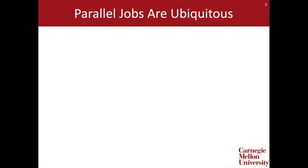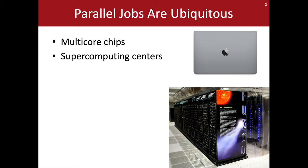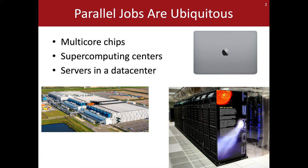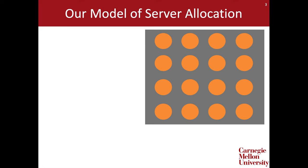As many of you know, modern computer systems are built to exploit parallelism. This could be the multi-core architecture in your laptop, the many cores of a supercomputing center, or even parallelizing across entire servers in a data center. In all of these systems, the workloads are increasingly parallel, which makes it especially important to understand how to efficiently allocate resources. Today we'll consider the problem of allocating servers to parallelizable jobs in a data center.